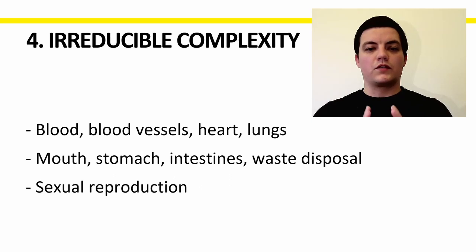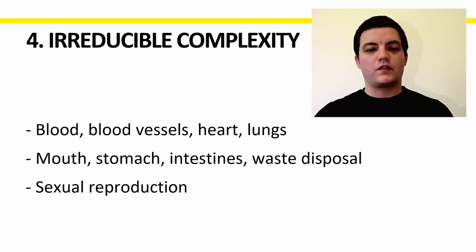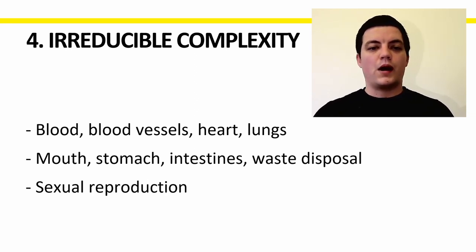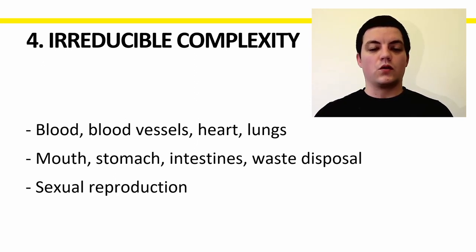Our circulatory system is a complete system that is dependent upon every part, and dependent upon the lungs to get oxygen in and CO2 out. The same with eating — we have a mouth, a stomach, intestines, and waste disposal. Which of those evolved first? How can any of those have evolved independent of the others? They're a complete system where each relies on the others. Even more complex is sexual reproduction: how do two creatures separately evolve the right working parts to be able to reproduce — not just in one creature, but in two different creatures at the same time?